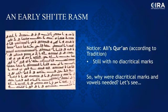Here is a Shiite Quran — known as Ali's Quran, or Mosahali, who is the fourth caliph. And it has no diacritical marks and certainly no vowelization.